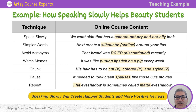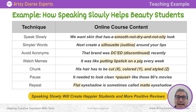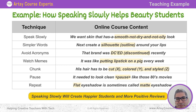Let's go over some examples of how an online teacher teaching beauty could use these techniques. First, speaking slowly. Let's rush through some content to see what it sounds like: 'We want skin that has a smooth, not dry, not oily look.' There's a lot there, and the 'nots' are confusing. Now slowly: 'We want skin that has a smooth... not dry... and not oily look.' Big difference. And later you can use repeat techniques, an on-screen checklist with check marks and X marks.